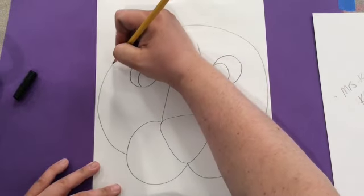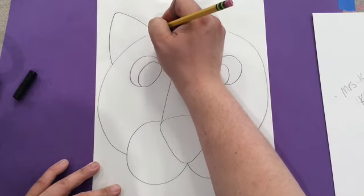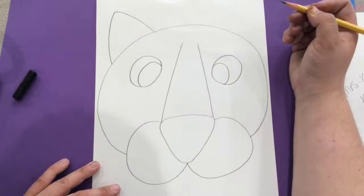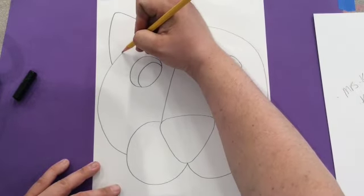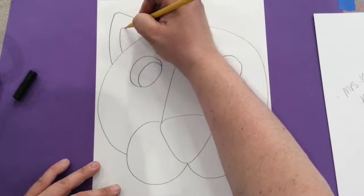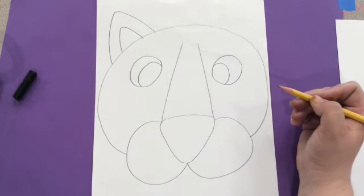Next we are going to add triangles for ears. I wanted to curve mine a little bit. If you want to make them straight you can. Just go up and then back down and then create another smaller triangle on the inside for the inside of your tiger's ear.